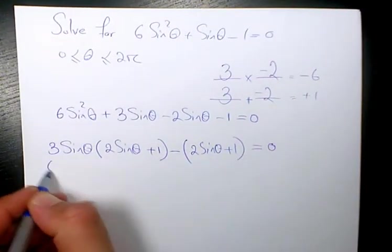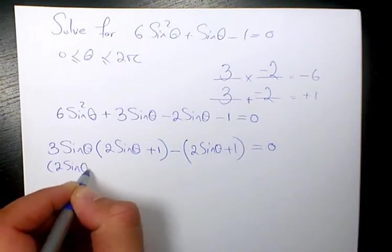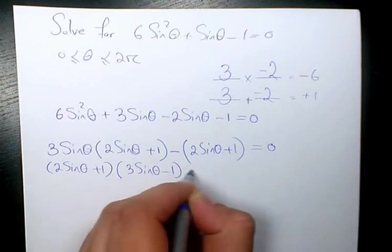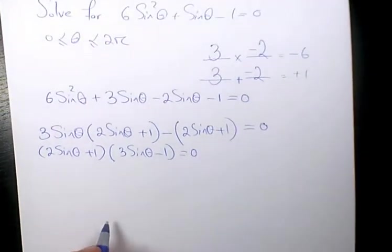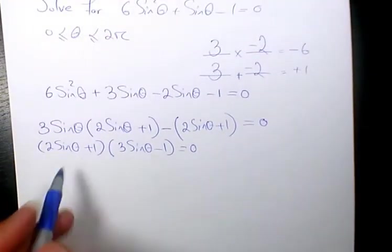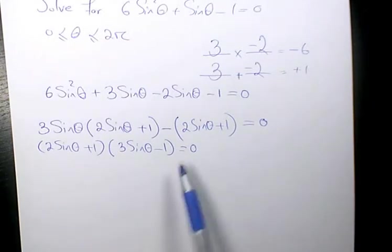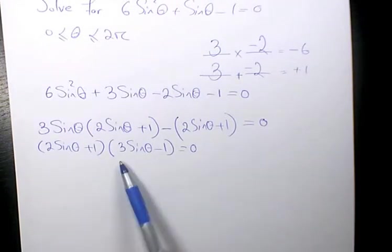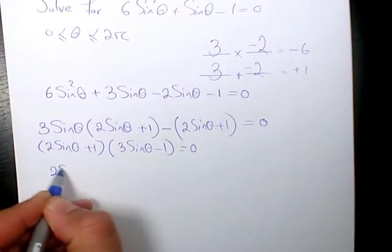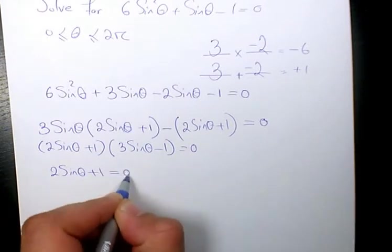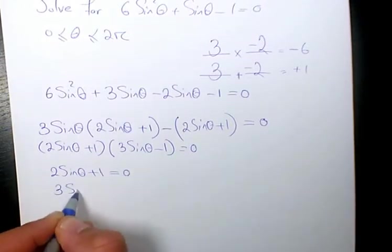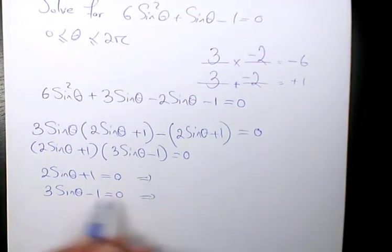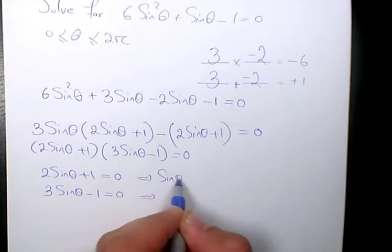Then I need to factor: 2 sine theta plus 1 times 3 sine theta minus 1 equals 0. Since two expressions multiplied together equal 0, it means either this expression is 0 or this expression equals 0. So we have 2 sine theta plus 1 equals 0, or 3 sine theta minus 1 equals 0.